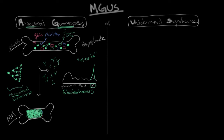So MGUS is asymptomatic. In multiple myeloma, this dysfunction becomes so severe that you start crowding out the bone marrow and you have dysfunction of the other types of blood cell precursors. Eventually someone with multiple myeloma will develop symptoms. In this sense, MGUS is a precursor to multiple myeloma. In fact, some people refer to MGUS as premyeloma.